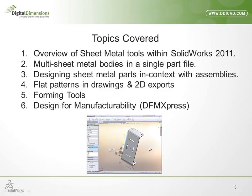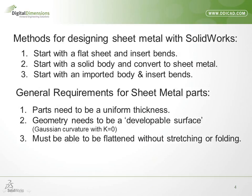Some of the methods you can use to design sheet metal parts within SOLIDWORKS are: starting with a basic flat sheet or sketch and then inserting bends using edge flanges, miter flanges, hems, and other regular sheet metal tools. Another approach is to start with a solid body, such as an extruded rectangle, and then use the convert to sheet metal functionality to convert it into a multi-body sheet metal part.